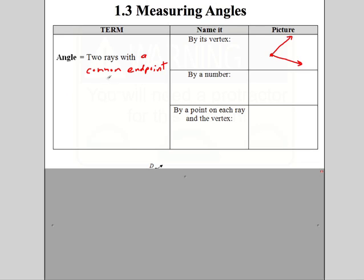We have some more vocabulary. This common endpoint is called the vertex — the vertex is the common endpoint. A lot of times we'll refer to that; it's the endpoint they have in common. Other parts of the angle we need to know: we've got the vertex, and we also need to know the sides. The sides of an angle are just the two rays.